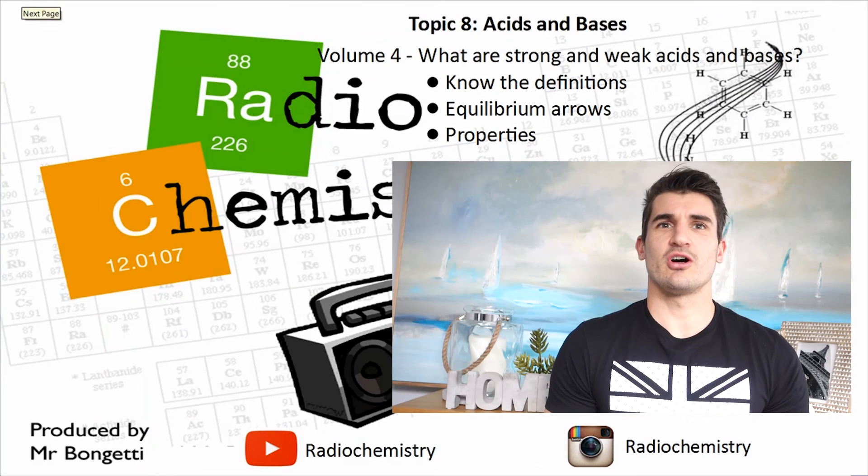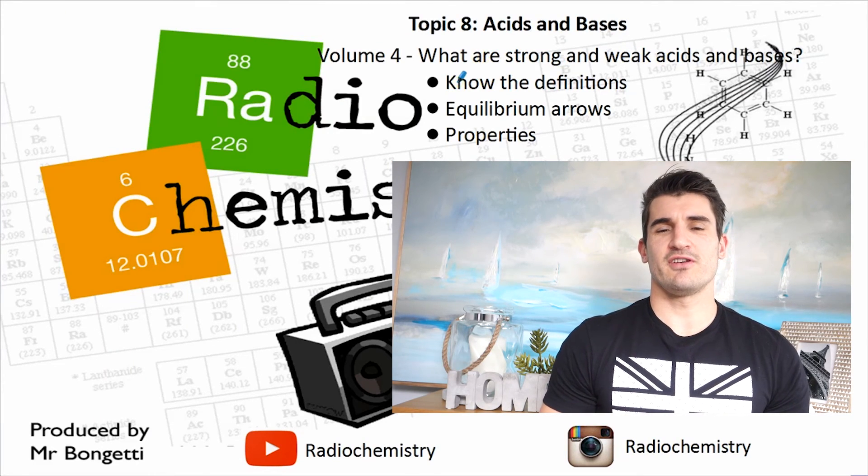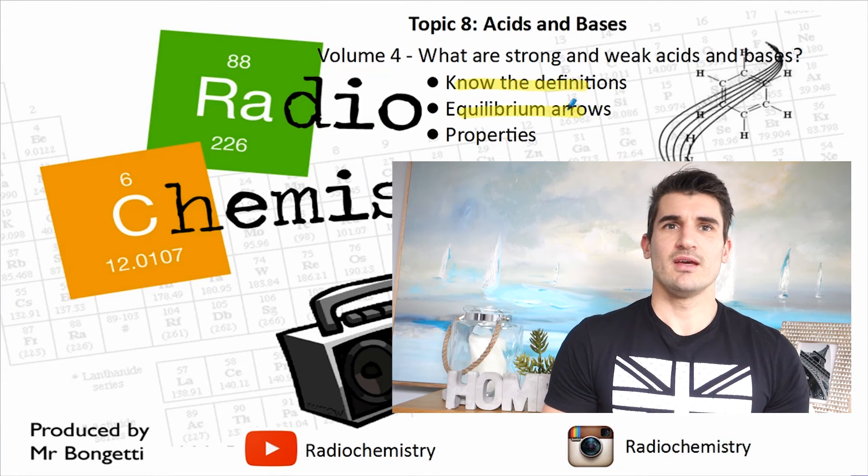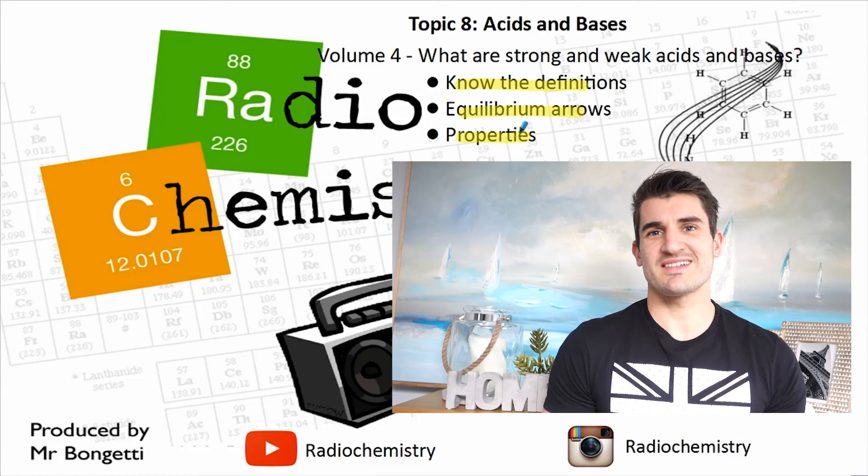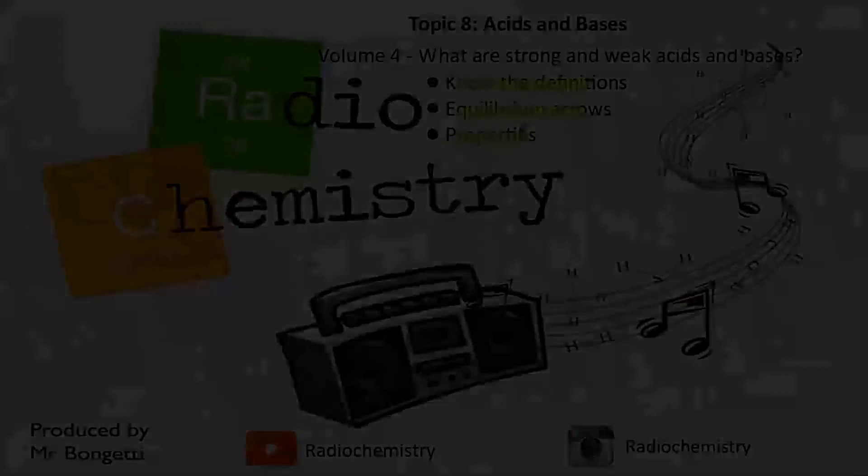Volume 4, some top tips. Know the definitions, strong, weak. Make sure you write equilibrium arrows when you have a weak acid or base and understand some of the properties. Thanks for watching guys. Don't forget, drop a like on the video, subscribe for more, and I'll see you next time.